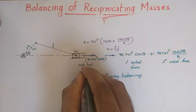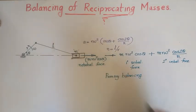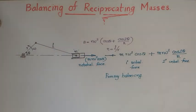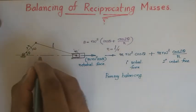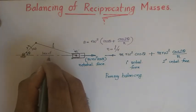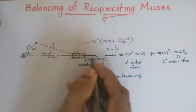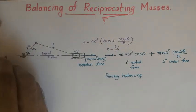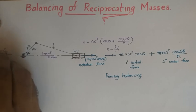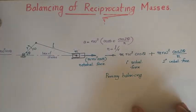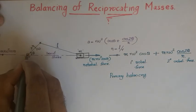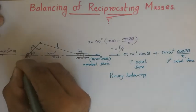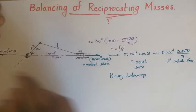The net unbalanced force along the line of stroke for primary balancing is m·r·Omega²·cos θ. To balance this, you need to produce a force of equal magnitude in the opposite direction along the same line of stroke. This can be achieved by extending the crank in the opposite direction along the same crank line and placing an equal reciprocating mass m at the same crank radius r.